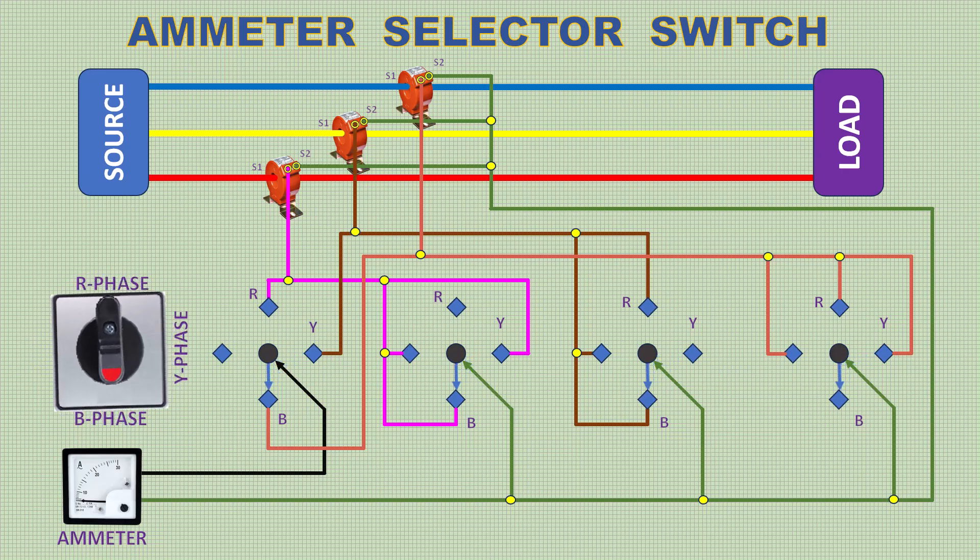Finally B phase position only B phase current will show. Our Selector Switch demonstration is completed.